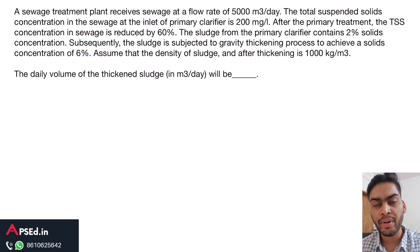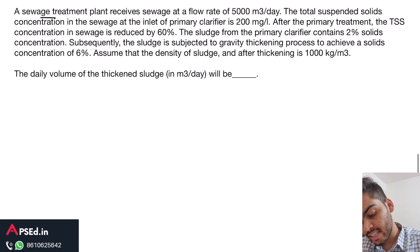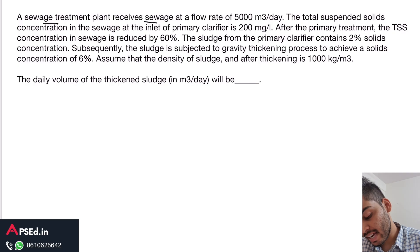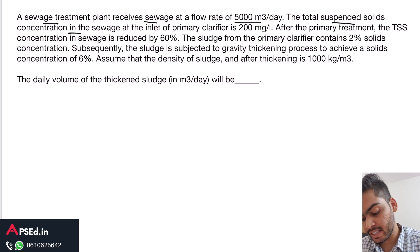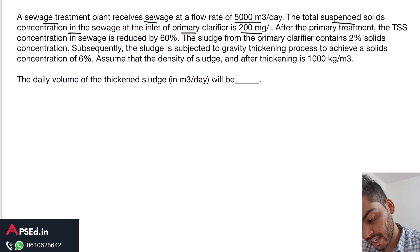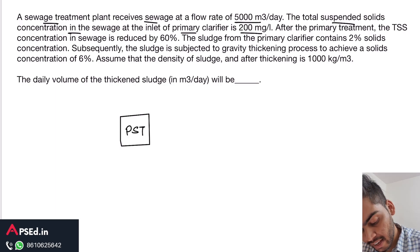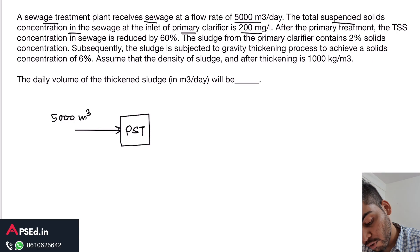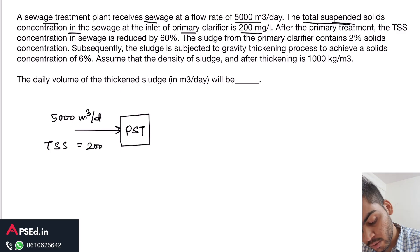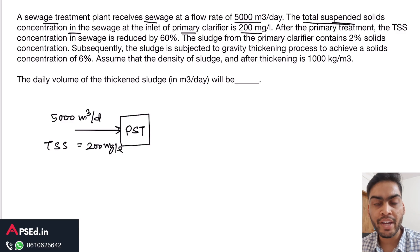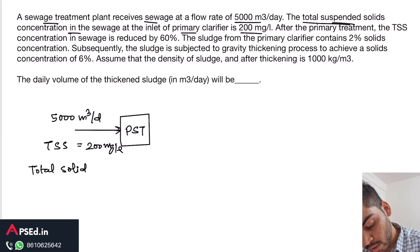Let's solve this question from GATE 2022 afternoon session. A sewage treatment plant receives sewage at a flow rate of 5000 cubic meters per day. The total suspended solids concentration in the sewage at the inlet of the primary clarifier is 200 milligrams per liter. We can draw a diagram: we have the primary sedimentation tank with an inlet flow rate of 5000 m³/day and TSS of 200 mg/L. Now we can find out the total solids at the inlet.